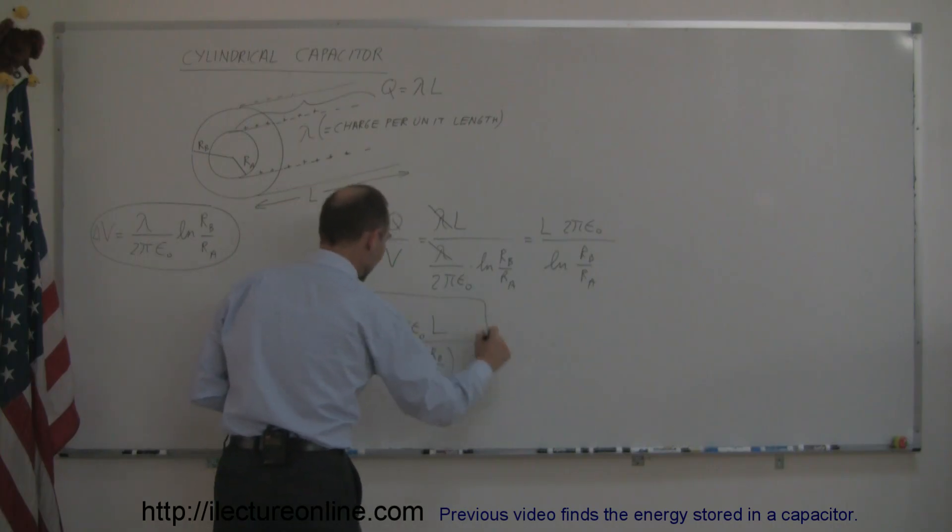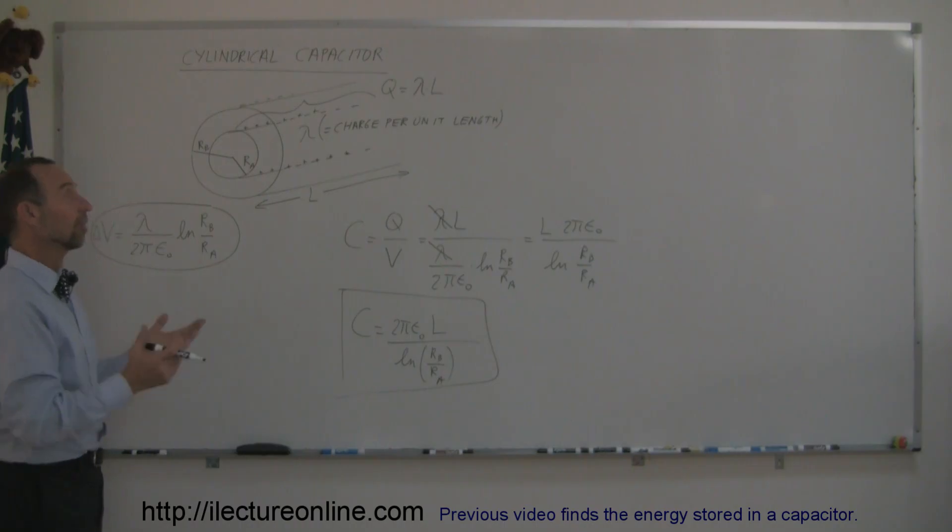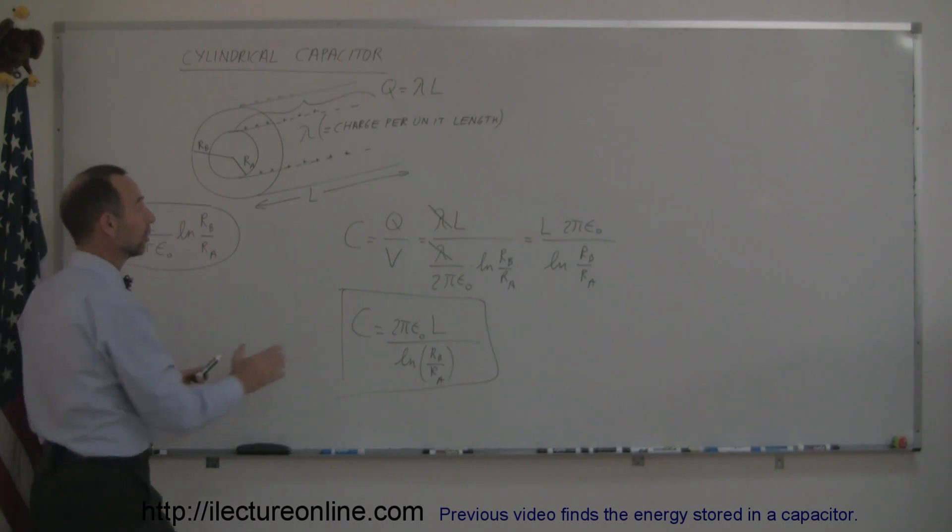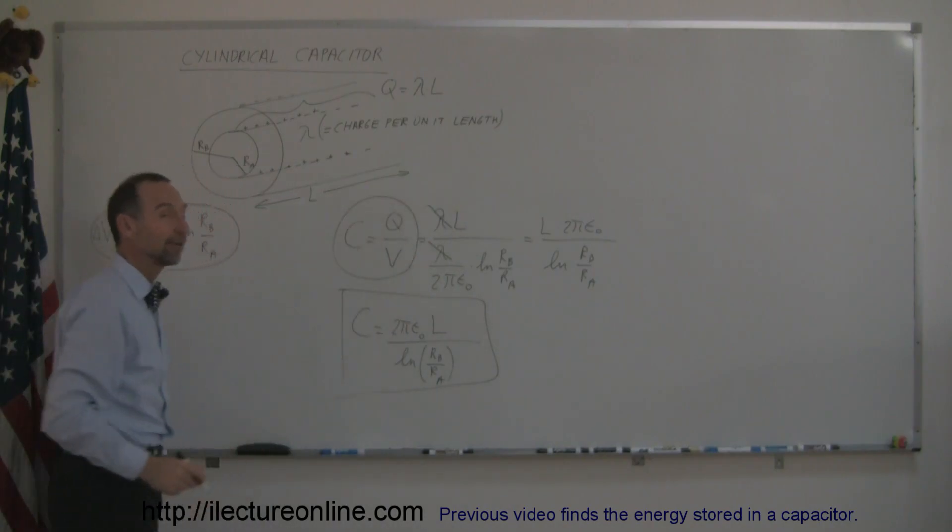And that is how you find the capacitance of a cylindrical capacitor. So it's not so bad, as long as you have this formula handy. Of course, if you didn't have this handy, you would have to figure this one out first. But at least this shows you how to apply that concept, knowing the potential difference between the inner and the outer cylinder, you can fairly easily find the capacitance of a cylindrical capacitor using the definition of capacitance. And that's how you do that.